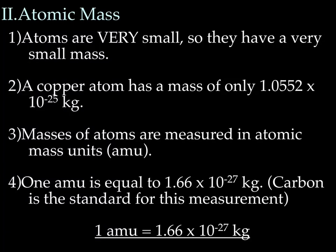Next topic: atomic mass. Mass — you can think of it as weight, how heavy something is. Atoms are really, really, really small, so they have a very small mass. In fact, if we weigh a copper atom, which is a medium-sized atom, a copper atom has a mass of only 1.0552 times 10 to the negative 25th kilograms.